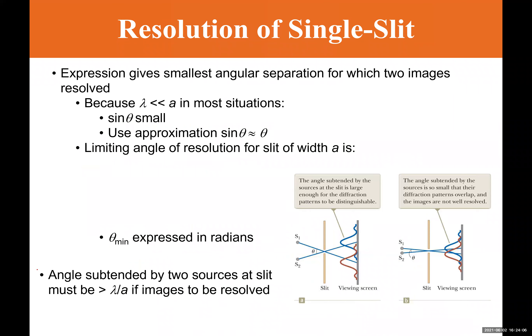This expression gives the smallest angular separation in radians for which two images are resolved. Because lambda is much smaller than a in most situations, sin(theta) is small and we can use the approximation. This is the limiting angle of resolution for a slit of width a. For any theta greater than theta_min we can separate the sources; for any theta less than theta_min we cannot.